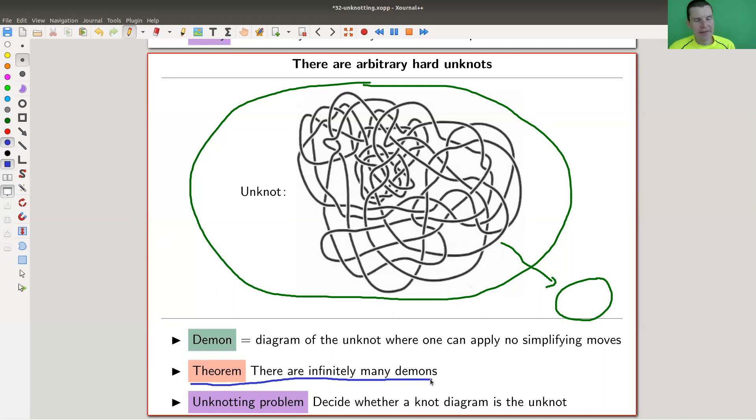Whether a diagram is the unknot or not is really supposed to be a terribly hard question, because you have these funny unknot diagrams which really don't look like unknots at all. They are, but they don't look like it. Deciding whether a knot diagram is the unknot is terribly hard.